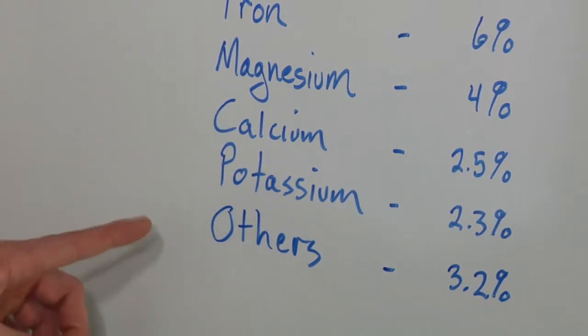3.2% makes up all the other elements found in earth's crust. Those few major elements come together in a couple of specific ways to form what we call mineral groups — sort of generic types of molecules and compounds.